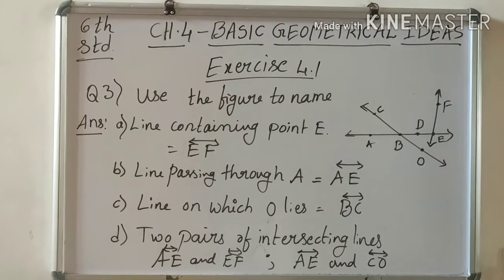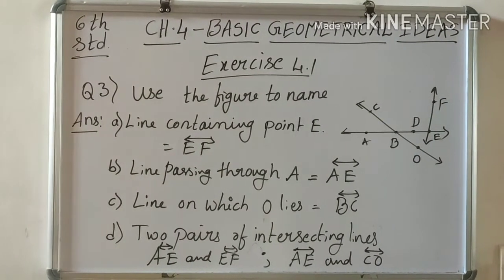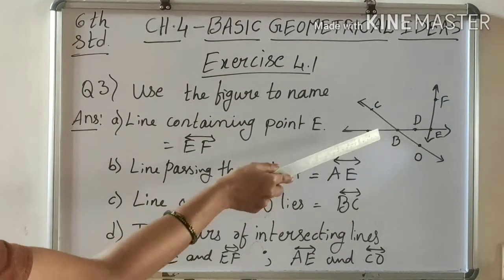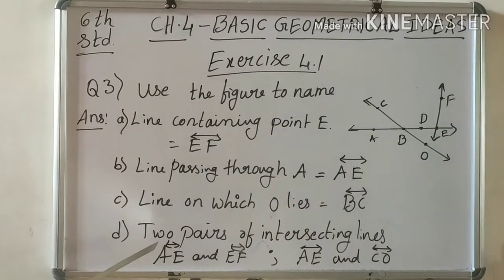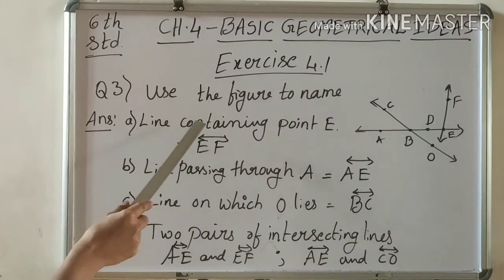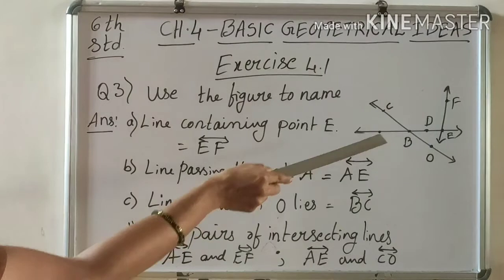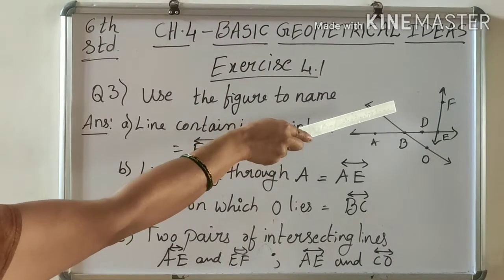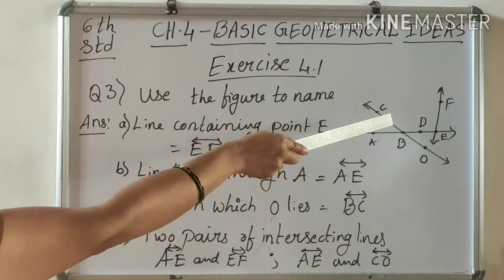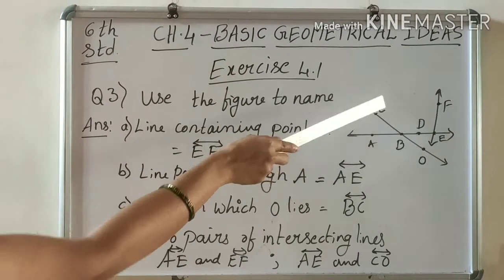Next, question number three: Use the figure to name various elements. Here is a figure given where three lines intersect. First one: line containing point E. Which line has point E on it? See there, EF is a line. It has point E on it.